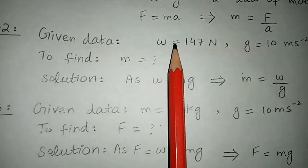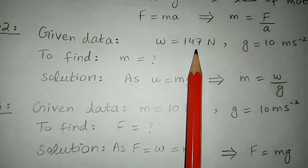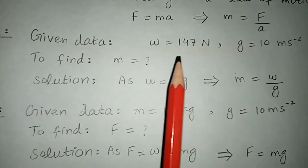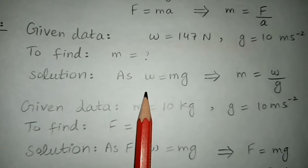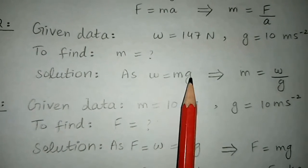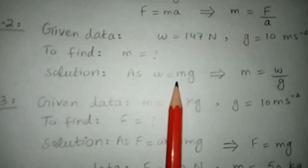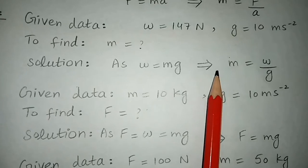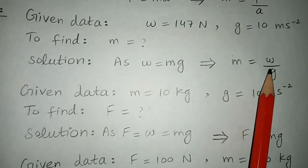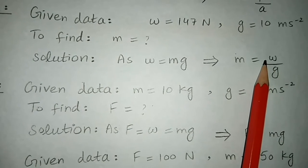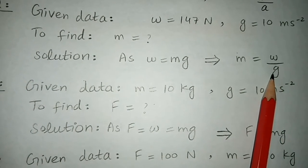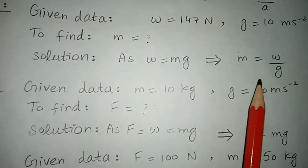Students, given data: weight equals 147 newton and g equals 10 meters per second square. We have to calculate the mass. As we know that weight equals mg, mass into gravitational acceleration. Simply rearrange the equation: m equals W over g. Place the value of weight 147 newton and g to calculate the mass.